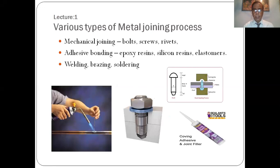The various types of metal joining processes are: number one, mechanical joining — bolts and nuts, screw joints, riveting joints. Number two, adhesive bonding — epoxy resins, silicone resins, elastomers, which are applied in joining plastic materials. Third is welding, brazing, and soldering. Mostly we will deal with welding in this subject.